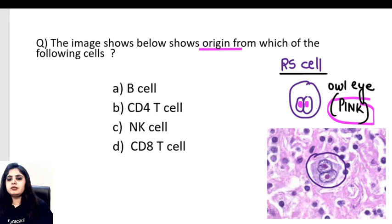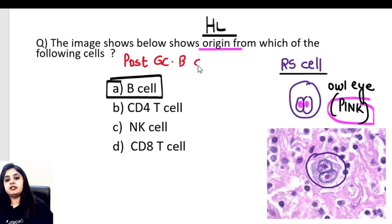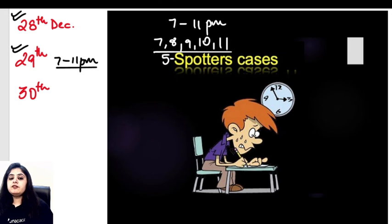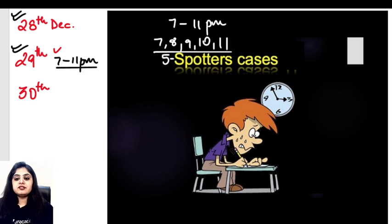They've asked what is the origin of a Reed-Sternberg cell, or indirectly the origin of Hodgkin's lymphoma. Hodgkin's lymphoma arises from B cells — to be very precise, it arises from post-germinal center B cells, which has also been a recent exam question. With that we've finished the 7 PM spotter, and we'll be meeting in exactly one hour for the next spotter image, continuing until 11 PM.